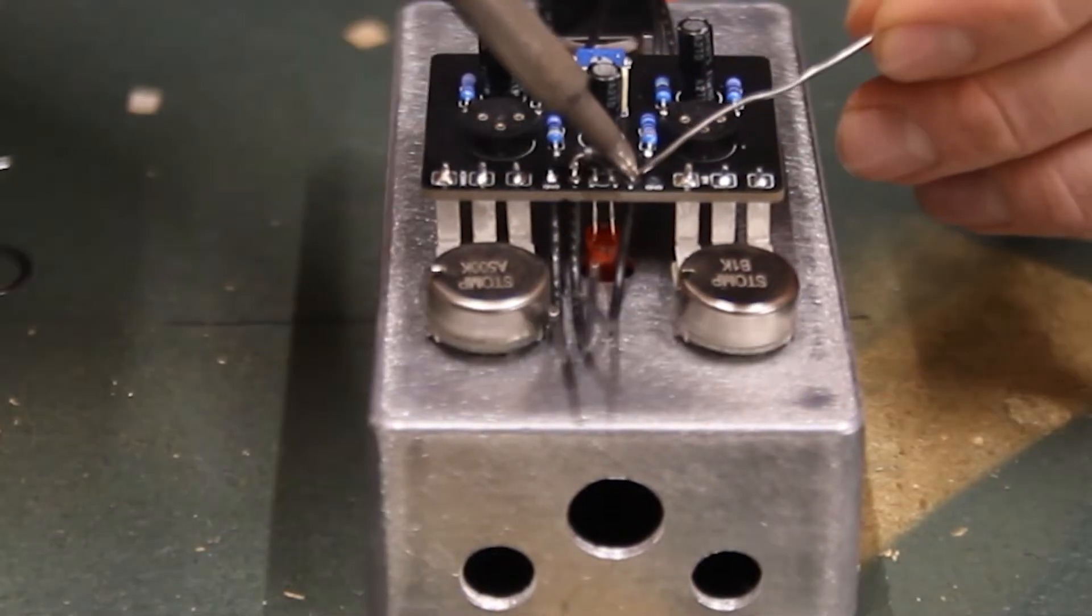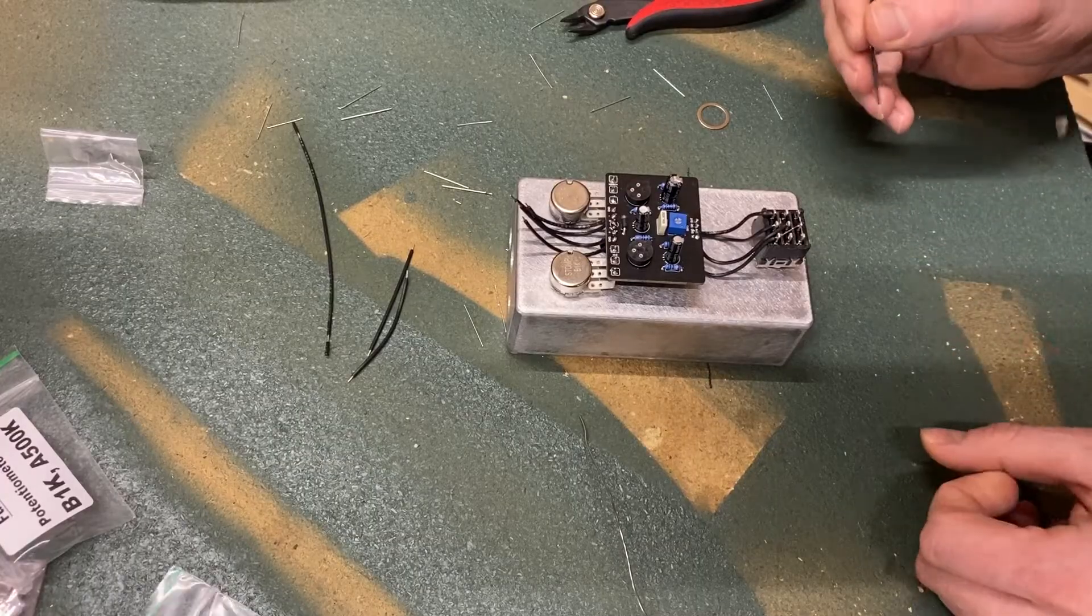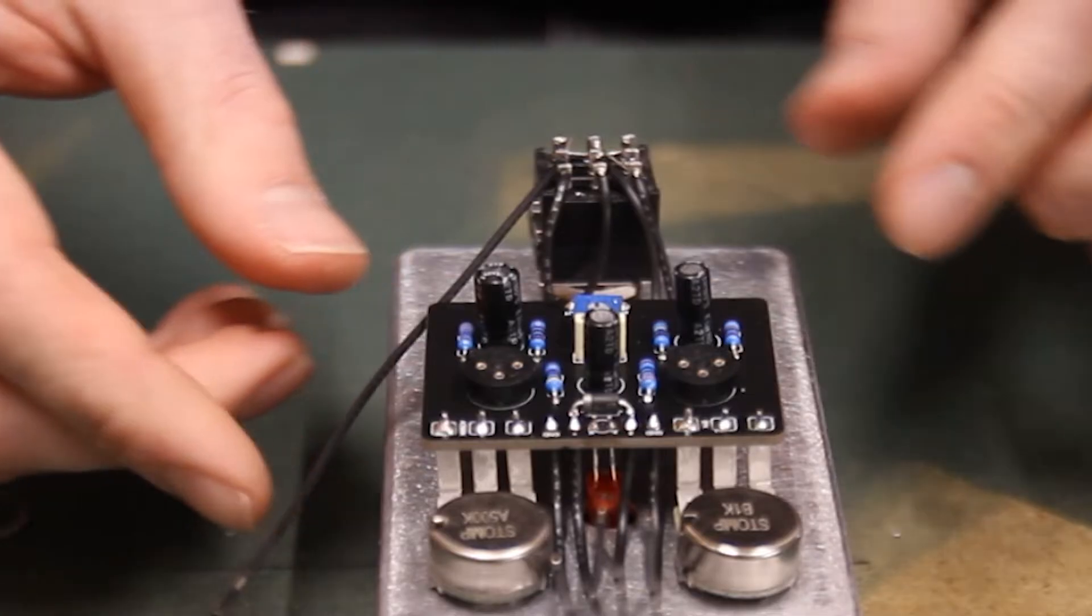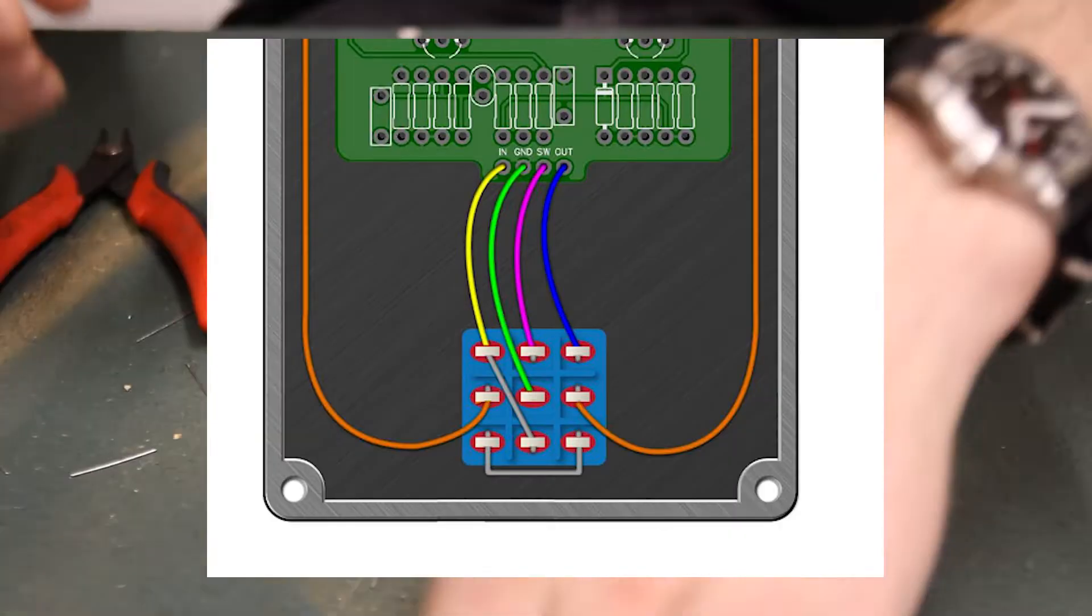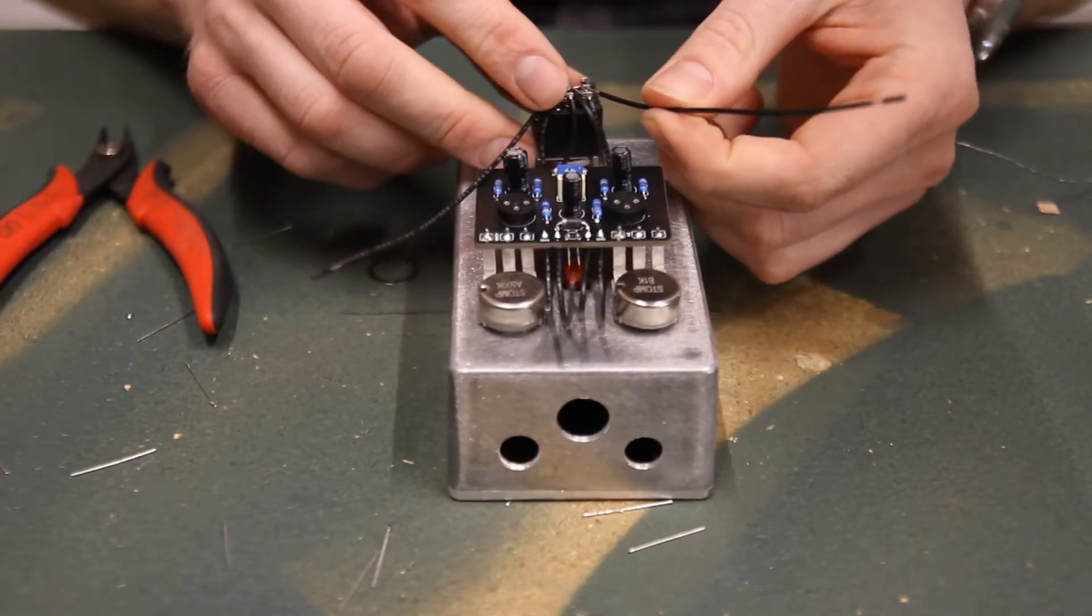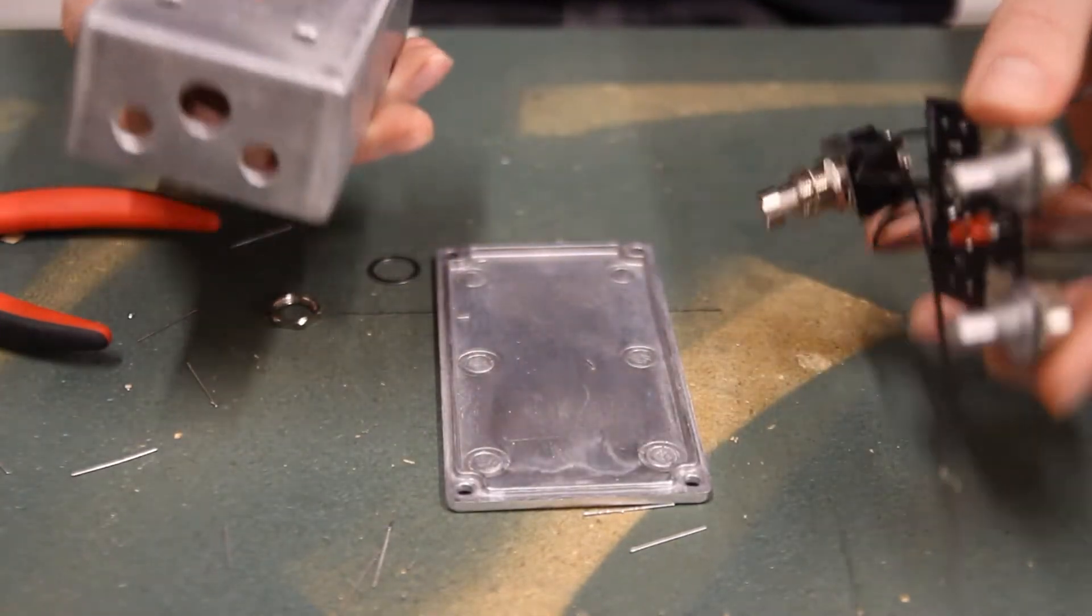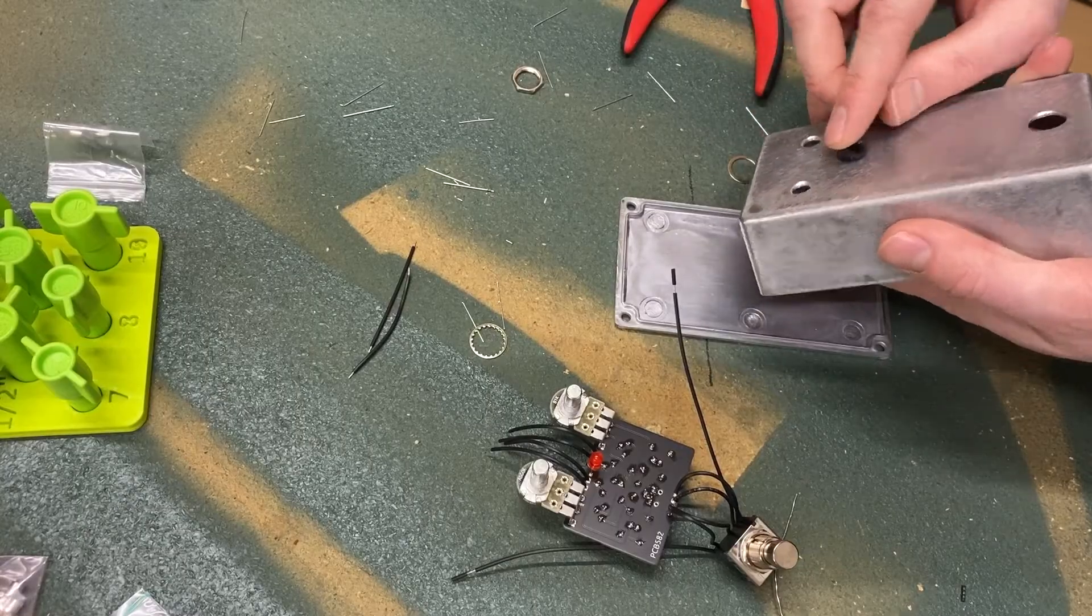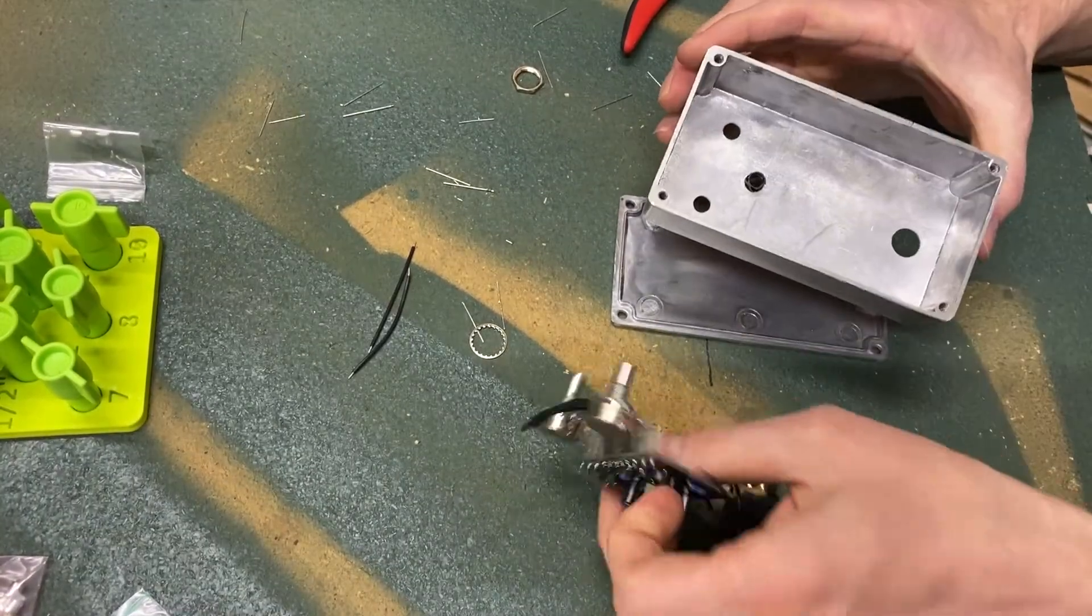Moving back to the switch, grab one of the longer wires and poke one end through this lug on the diagram on your switch. Solder it in. Do the same on the other side with the last long wire. Poke it through this hole and solder it in. Unmount the switch and remove the assembly from the top of the enclosure.